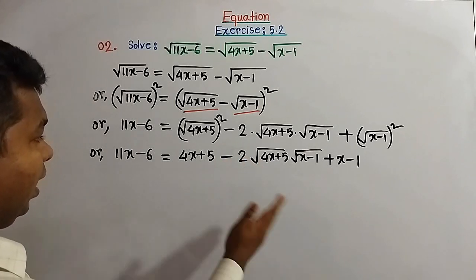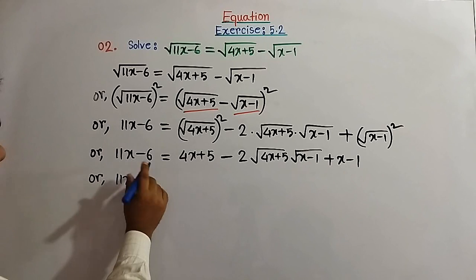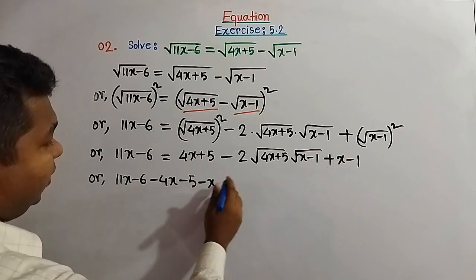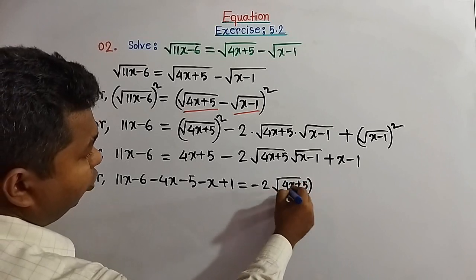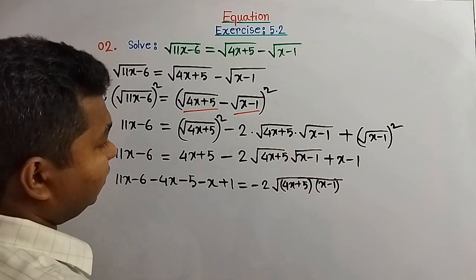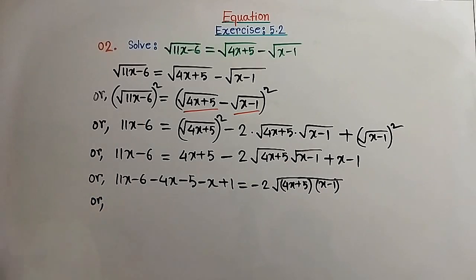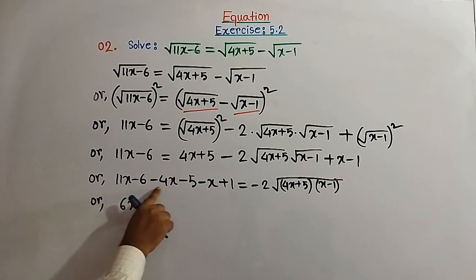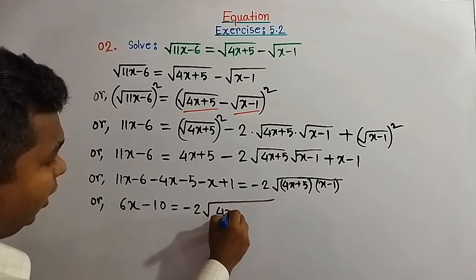We put the radical term on one side and all other terms on the other side. So: 11x minus 6 minus 4x minus 5 minus x plus 1 equal to minus 2 times square root of (4x plus 5) times (x minus 1). Simplifying the left side: 11x minus 4x minus x equals 6x, and minus 6 minus 5 plus 1 equals minus 10. So 6x minus 10 equal to minus 2 times square root of (4x plus 5)(x minus 1).